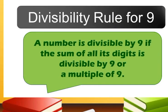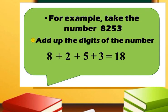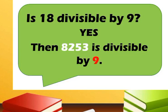Now let's have the divisibility rule for 9. A number is divisible by 9 if the sum of all its digits is divisible by 9. Let's take 8,253 for example. We add up the digits: 8 plus 2 plus 5 plus 3 equals 18. Is 18 divisible by 9? Yes. So the number 8,253 is divisible by 9.